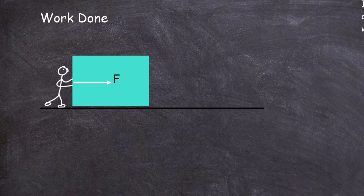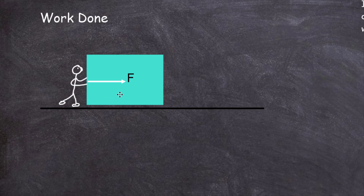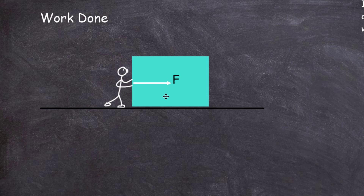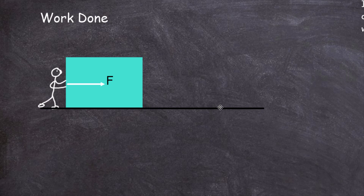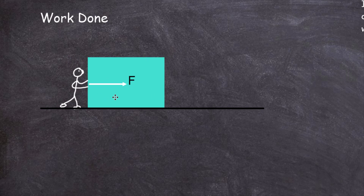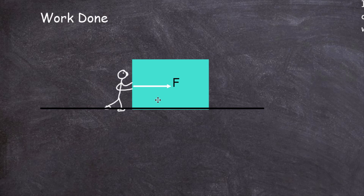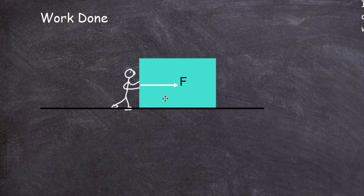Work done in Physics. Let's look at this example of a little person pushing a big block along a frictionless floor. There they go, they start to push along and the block moves. In the world of physics, we say that the force provided by the person pushing the block has done work on the block. We say that energy has been transferred. So if you've got a force applied to an object and that force makes the object move, then we say work has been done by the force on that object.